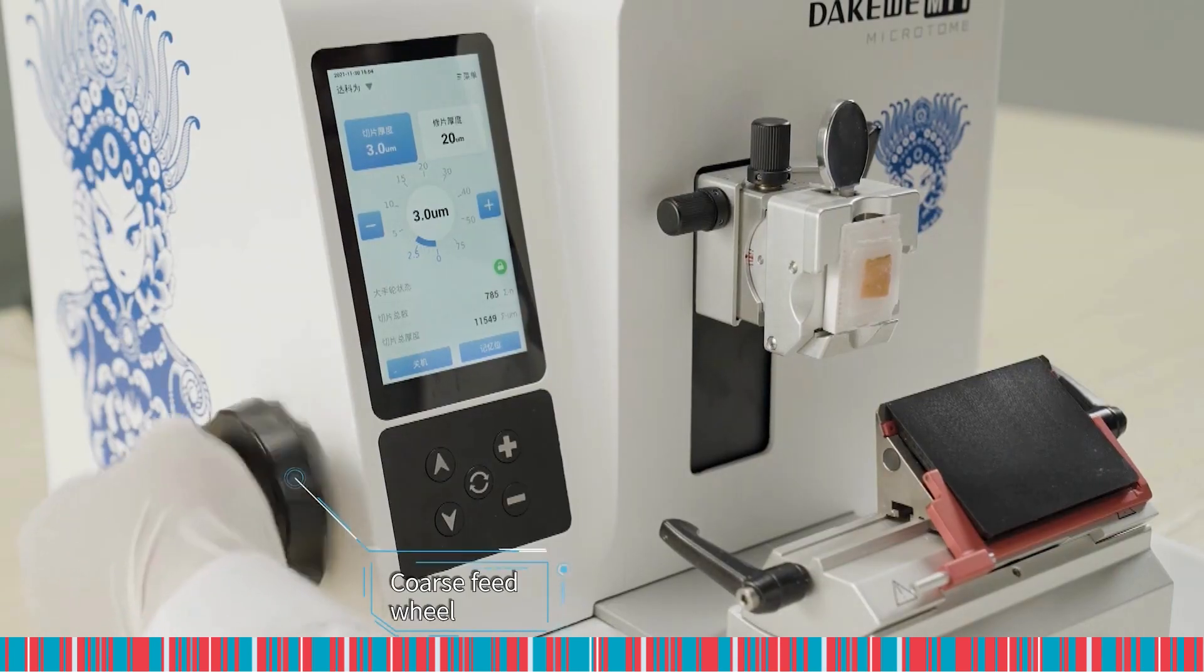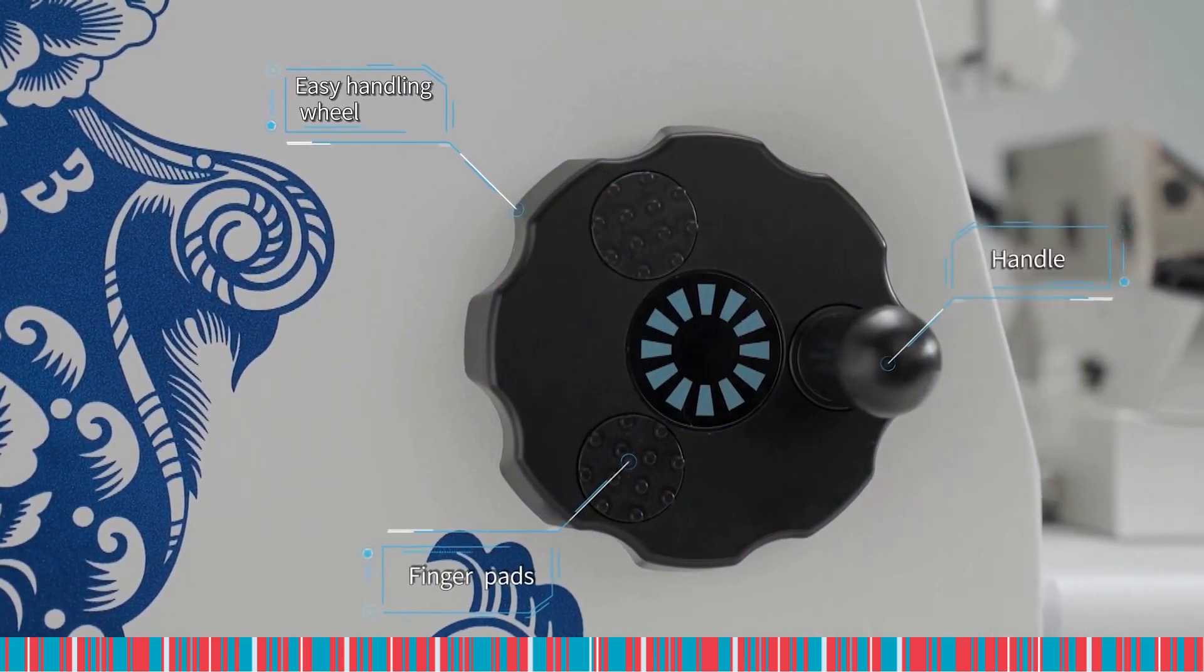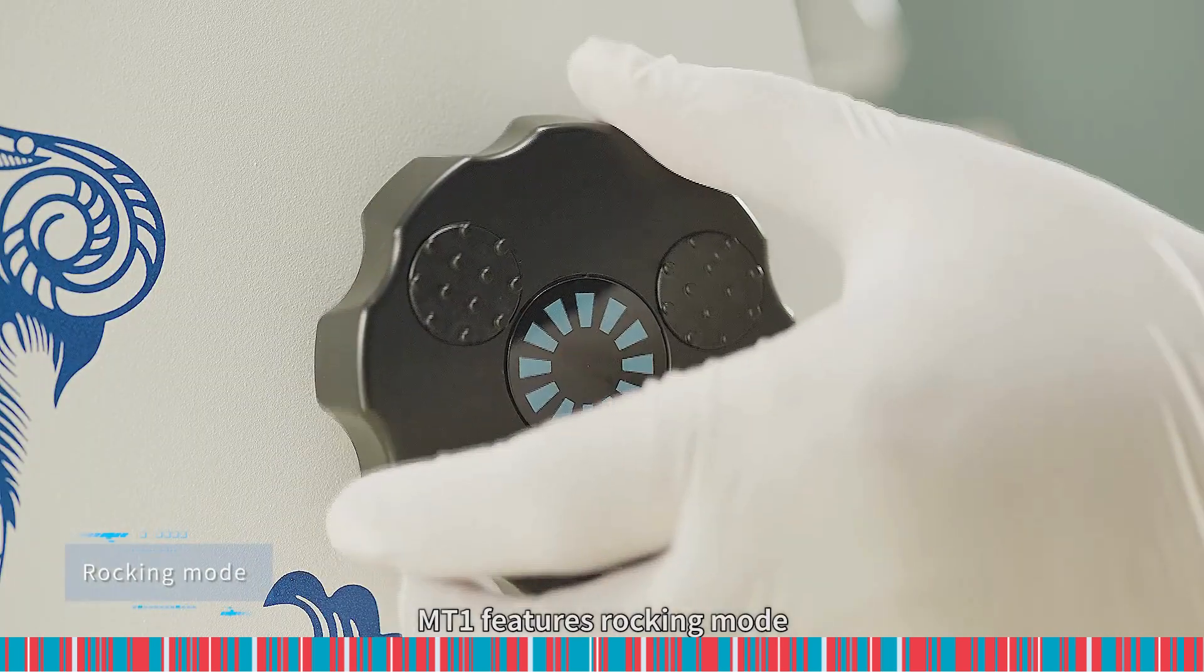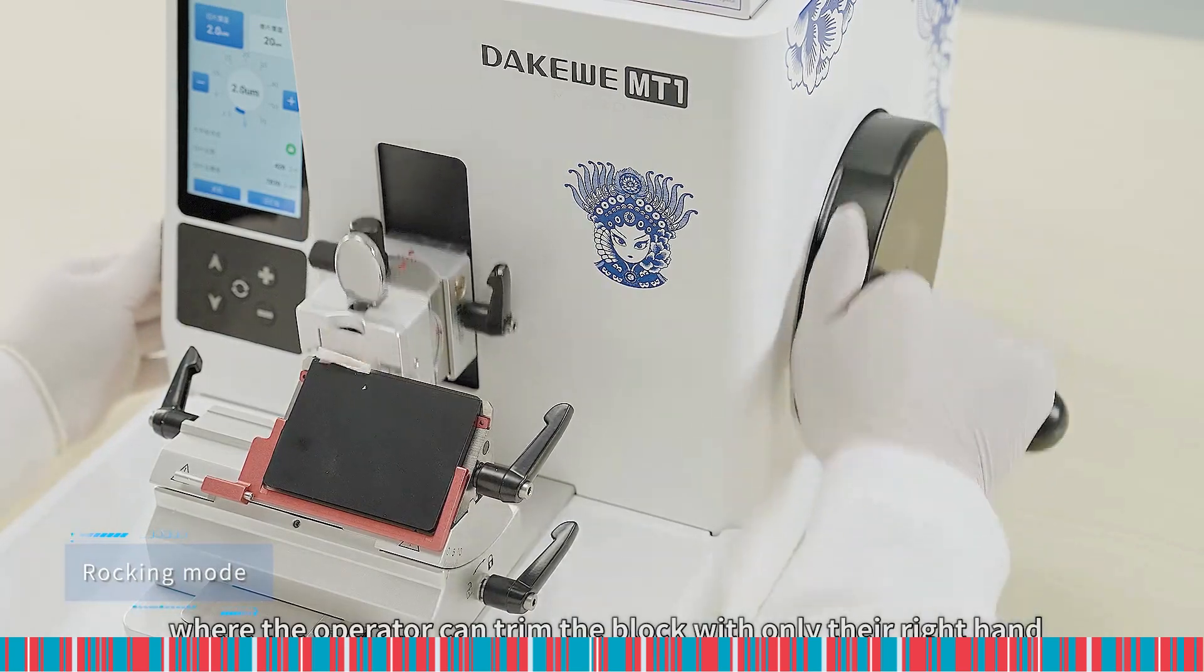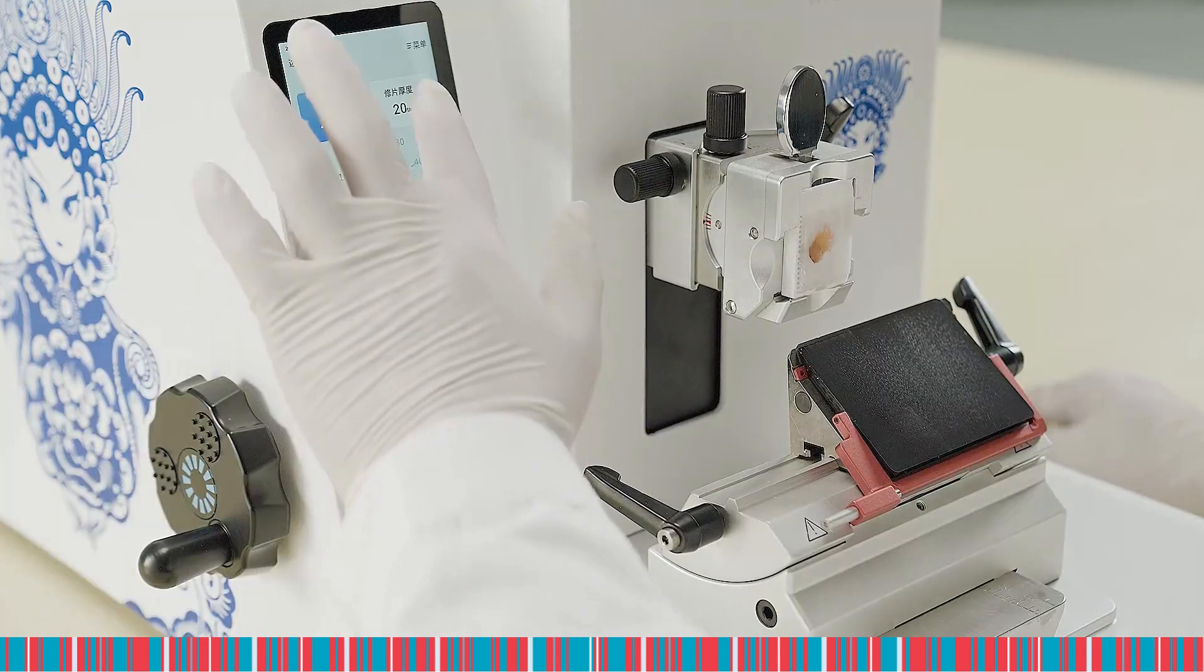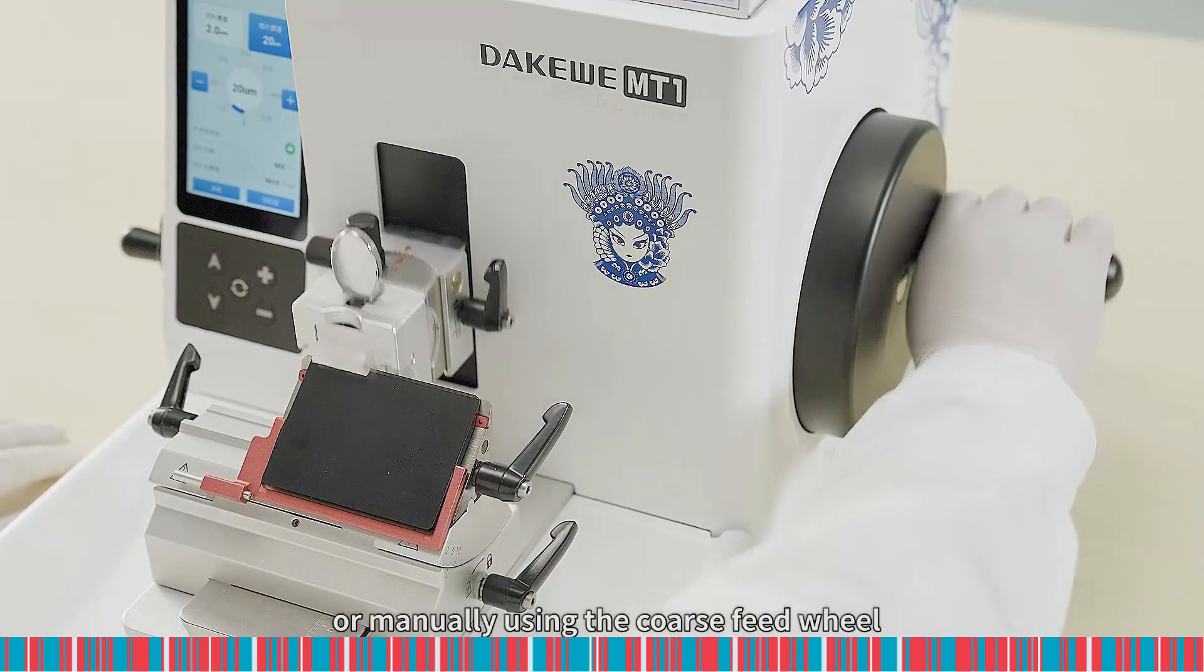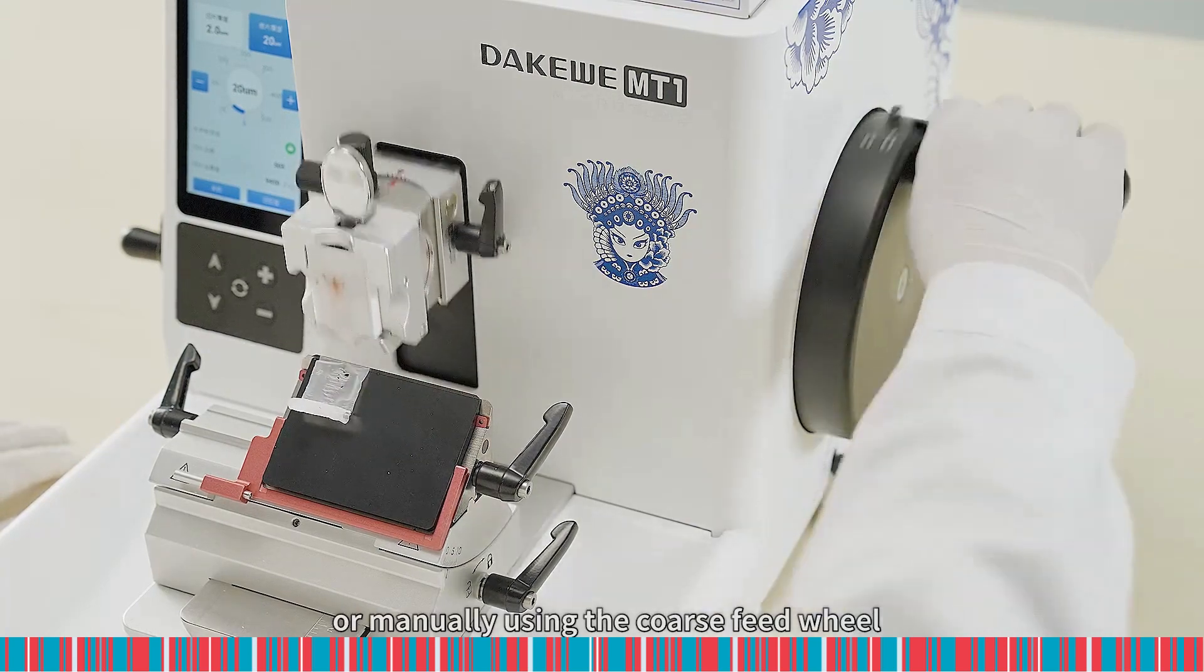3-in-1 coarse feed wheel fits user preference. MT1 features rocking mode where the operator can trim the block with only their right hand. Trimming can be done semi-automatically or manually using the coarse feed wheel.